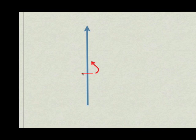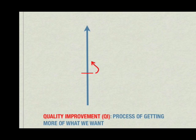Quality improvement is a process of saying, I perfectly accept where I'm at right now, as shown by this horizontal line, and I'm going to use my creativity to find ways to get more of what I want. Quality improvement, or QI, is the process of getting more of what we want.